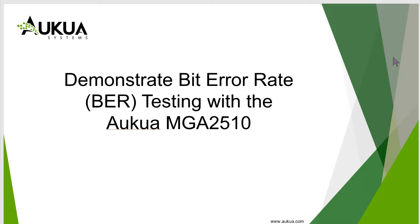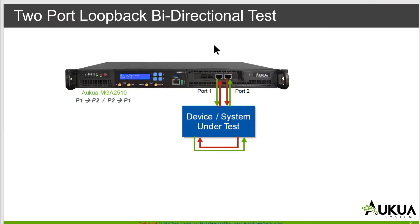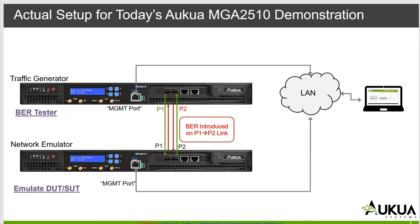Today we're going to demonstrate bit error rate testing with the Akua MGA2510. In today's test, we're going to have a two-port loopback bi-directional test. We will have P1 going to P2 and P2 going to P1 through a device or system under test according to the block diagram. For today's test, we will actually have a second Akua MGA2510 acting as a device under test.